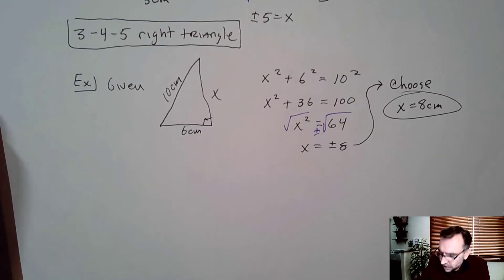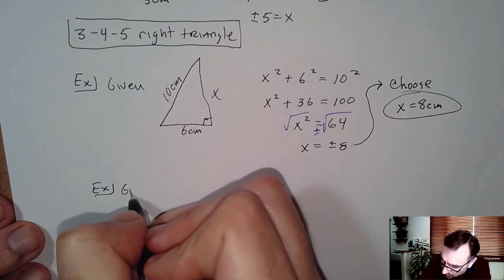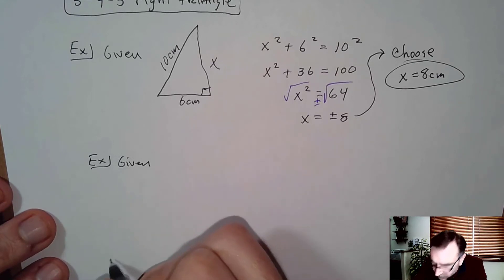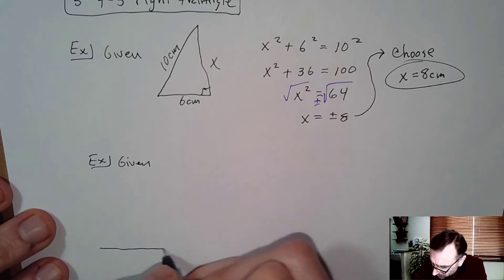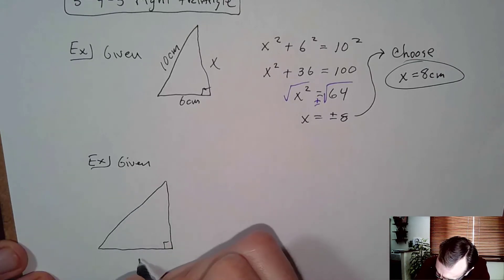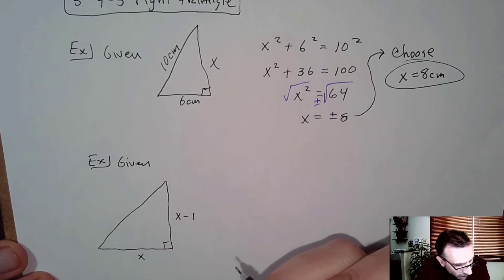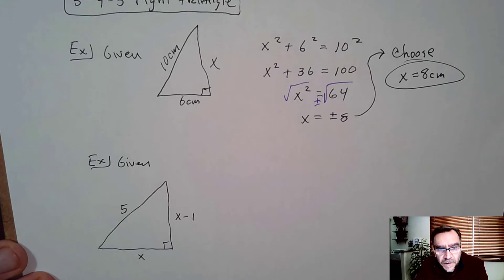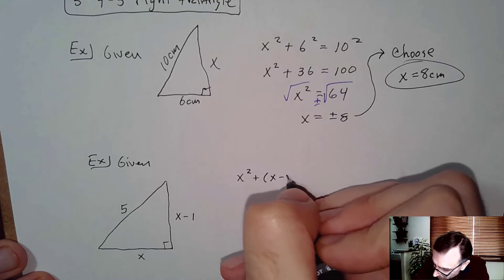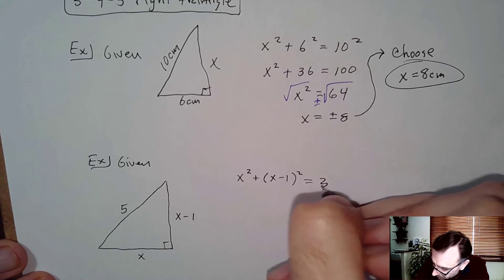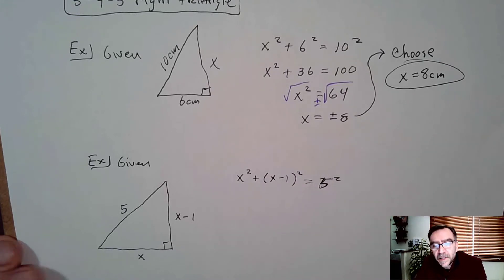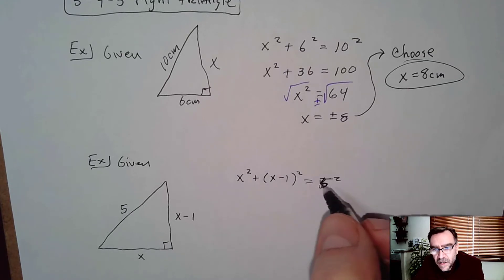Sometimes problems give us side lengths in terms of algebra. Here's a right triangle where the base is x, the height is x minus 1, and the hypotenuse is 5. Applying the Pythagorean Theorem: x squared plus (x minus 1) squared equals 5 squared. We'll take that extra step in a moment.